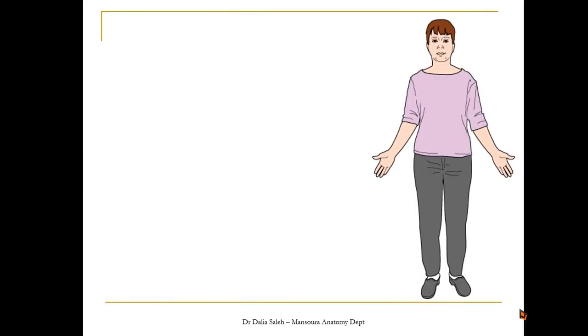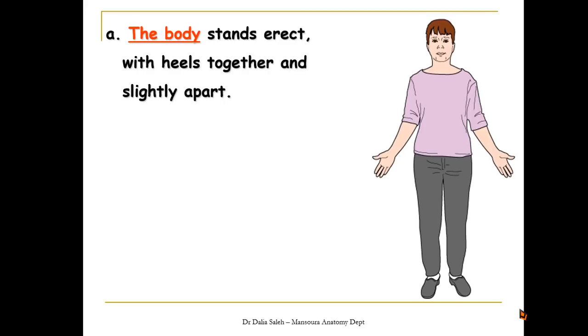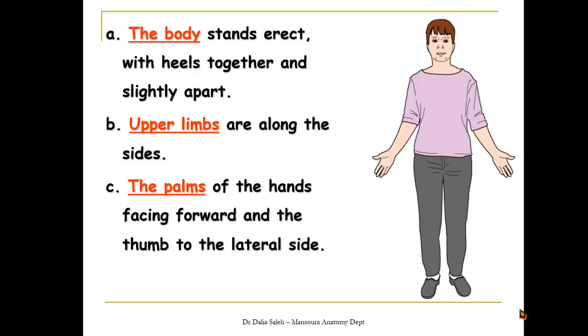The anatomical position is an imaginary position the anatomists agree on. So when we describe the human body, we imagine it as if it is standing in the anatomical position. In this position, the body stands erect, with heels together and slightly apart. The upper limbs lie along the sides of the body. The palms of the hands are facing forward and the thumb lies on the lateral side. The head and eyes are facing forward.